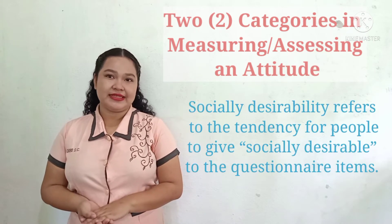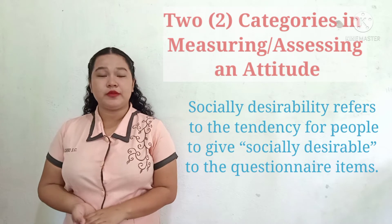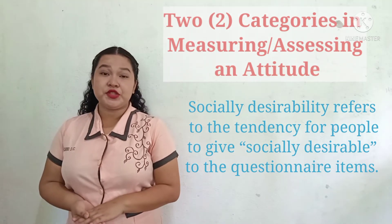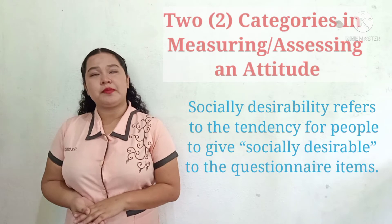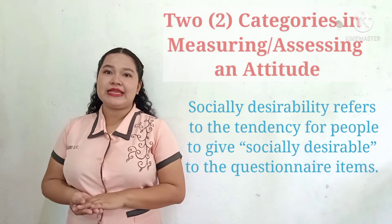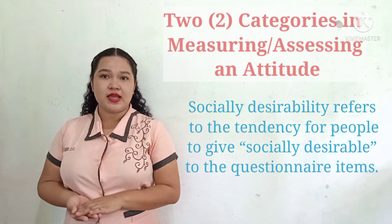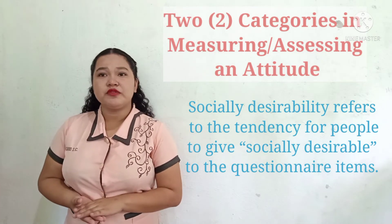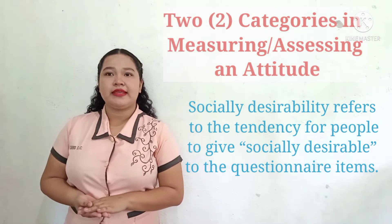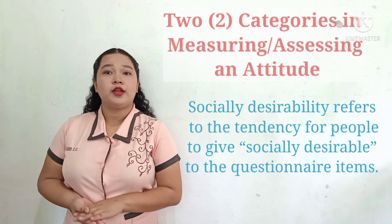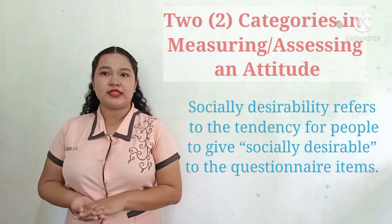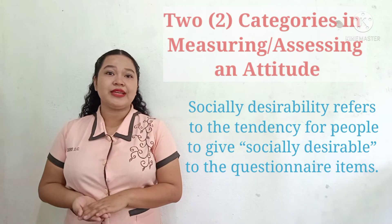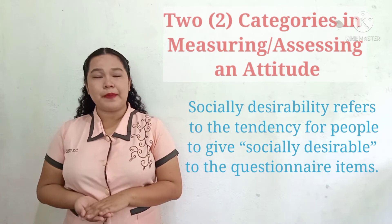Social desirability refers to the tendency for people to give socially desirable responses to questionnaire items. People are often motivated to give replies that make them appear well-adjusted, open-minded, and democratic. Self-report scales that measure attitude towards race, religion, sex, etc. are heavily affected by social desirability bias.